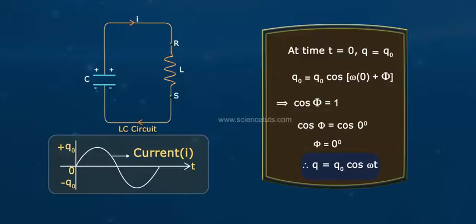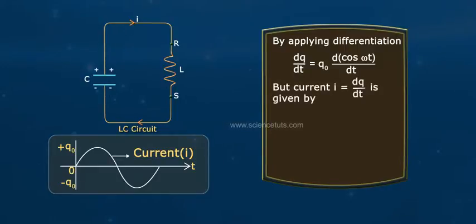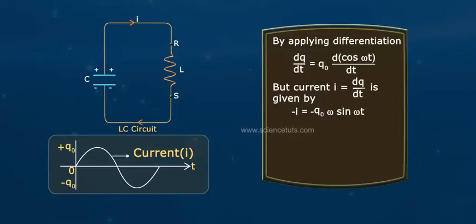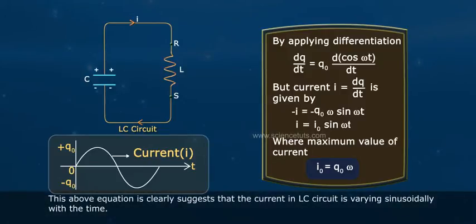Therefore, Q equals Q₀·cos(ωT). Applying differentiation, dQ/dT equals Q₀ times d(cos ωT)/dT. Since current I equals minus dQ/dT, we get I equals minus(−Q₀ω·sin ωT), so I equals I₀·sin(ωT), where the maximum current I₀ equals Q₀ω. This equation clearly shows that the current in the LC circuit varies sinusoidally with time.